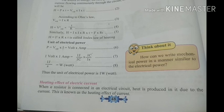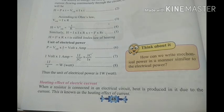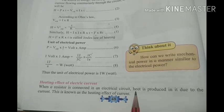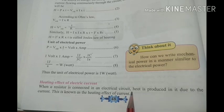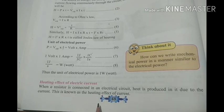Last experiment mein bhi humne dekha tha ki jo bhi do points hain wire ke, unke beech mein agar hum koi resistor lagate hain, aur us resistor mein se agar current pass hota hai, toh wahan pe heat produced hoti hai, kyunki current ko resistor se hokar pass hona hota hai. Toh yeh jo heat produced hoti hai, us effect ko hi heating effect of current kaha jaata hai.